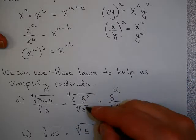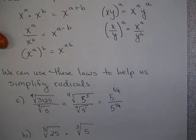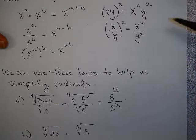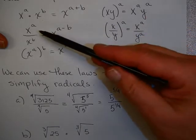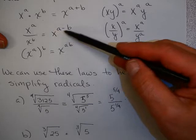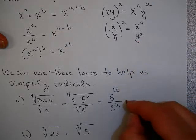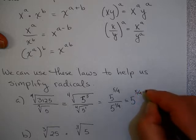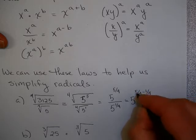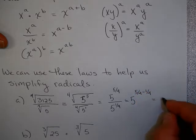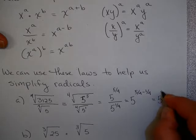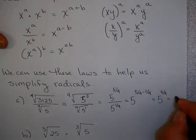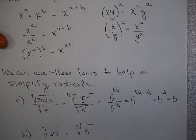That gives you 5 to the 5 fourths over 5 to the 1 fourth, using that definition for radicals and rational exponents that we have up here. By my rules of exponents, I have x to the a over x to the b equals x to the a minus b. So I can write this as 5 to the 5 fourths minus 1 quarter, which is 5 to the 4 fourths, which is just 5.